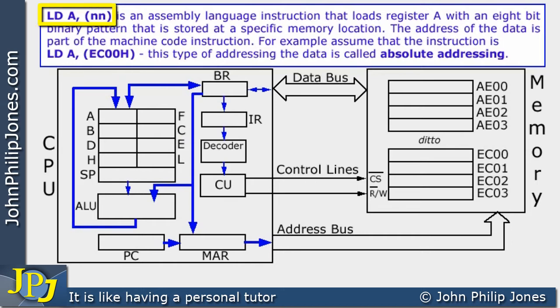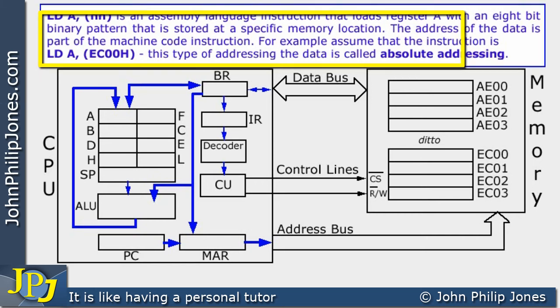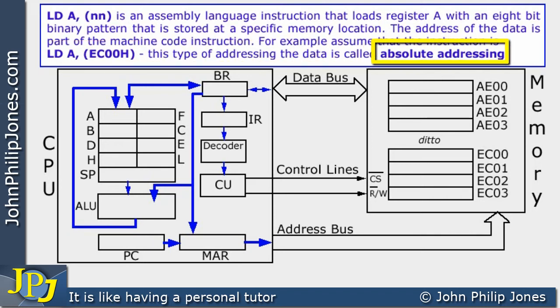Load A, (NN) is an assembly language instruction that loads register A with an 8-bit binary pattern stored in a specific memory location. The address of the data is part of the machine code instruction. For example, let's assume we have the instruction Load A, (EC00H), and we're dealing with a type of addressing called absolute addressing.